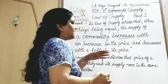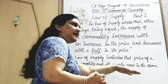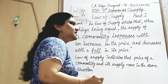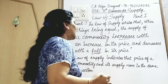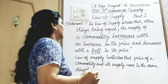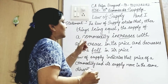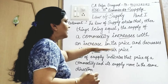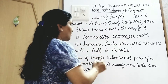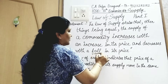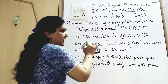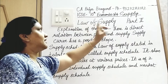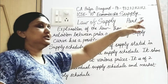That is, if price is increasing, supply is also increasing. If price is decreasing, supply is also decreasing. So supply increases with an increase in price and decreases with a fall in its price — the keyword here being 'fall in its price'.